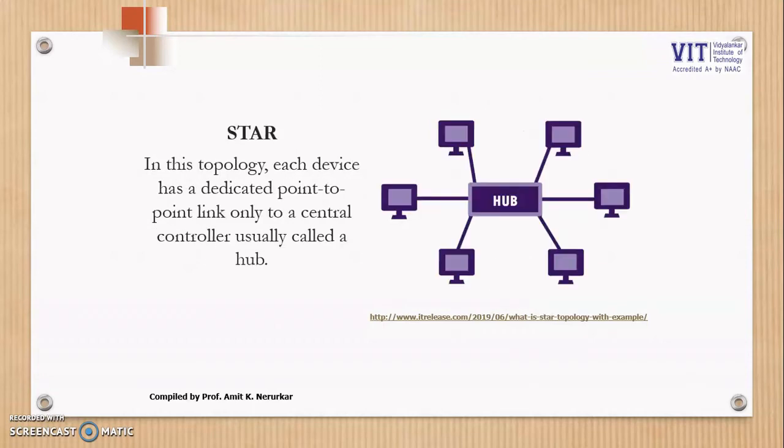The next topology is known as star topology, where every device is connected to a central device known as a hub. A hub or maybe you can use a networking component on a star. All of these devices would be communicating through the hub. If this device wants to send data to a particular device, for example this device, the packet will come from this device, go to the hub, and from the hub it would be delivered to this particular device.